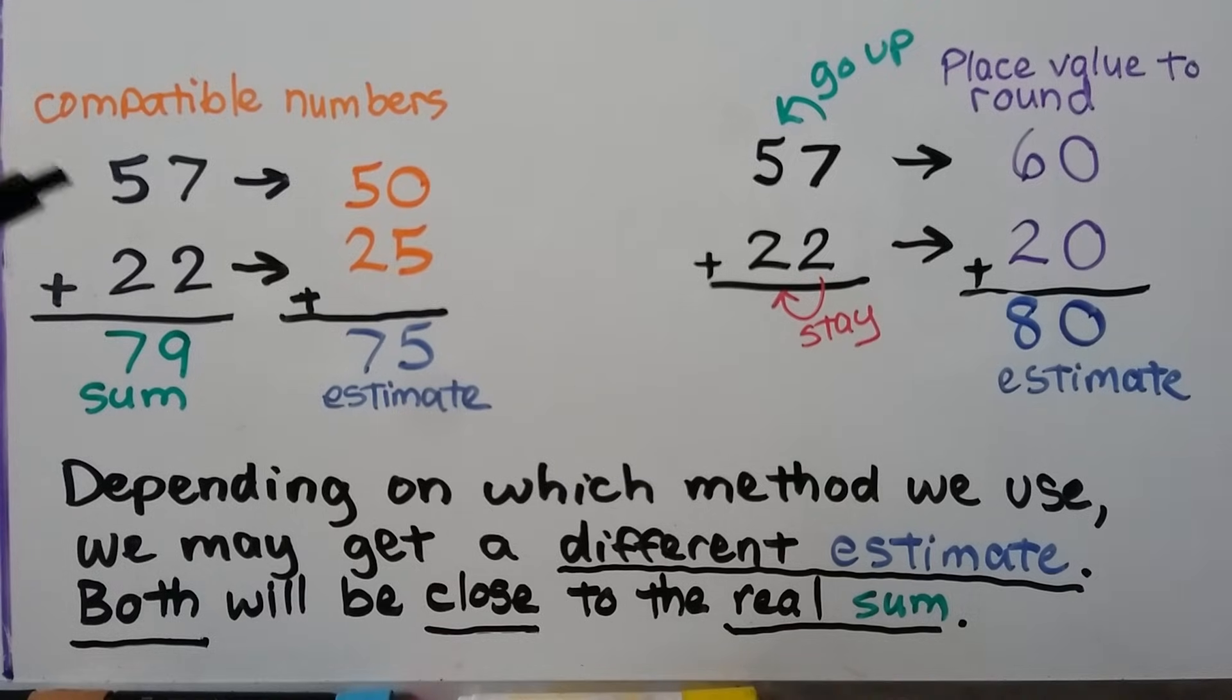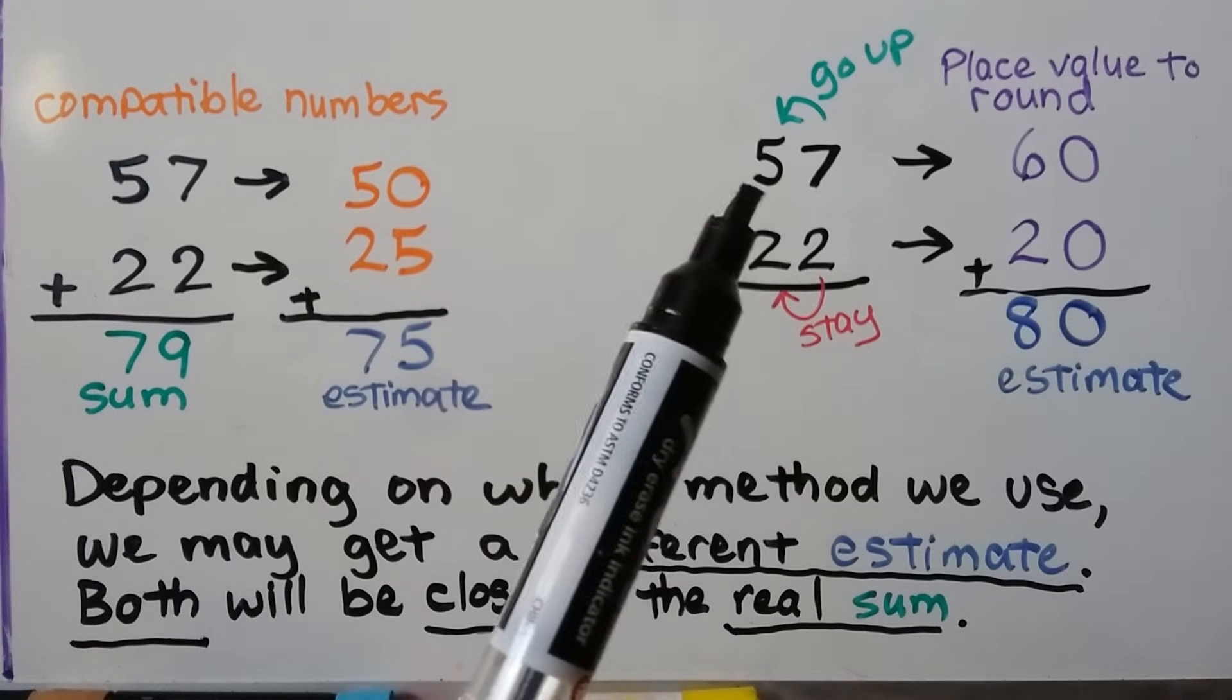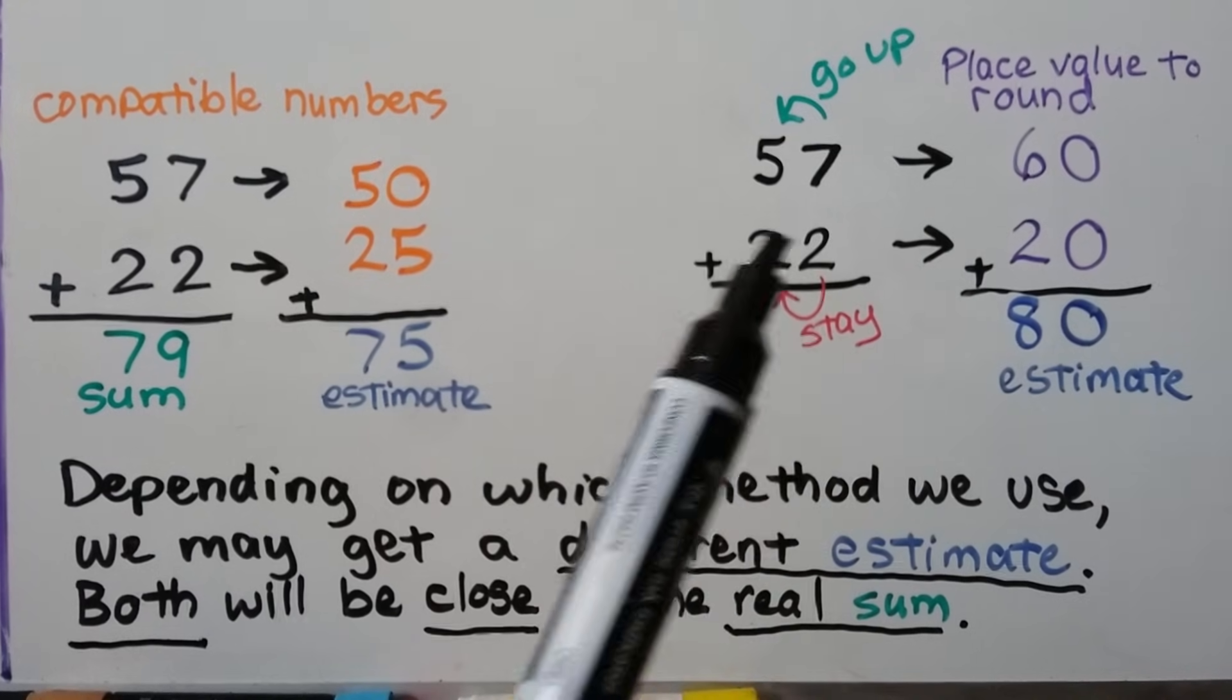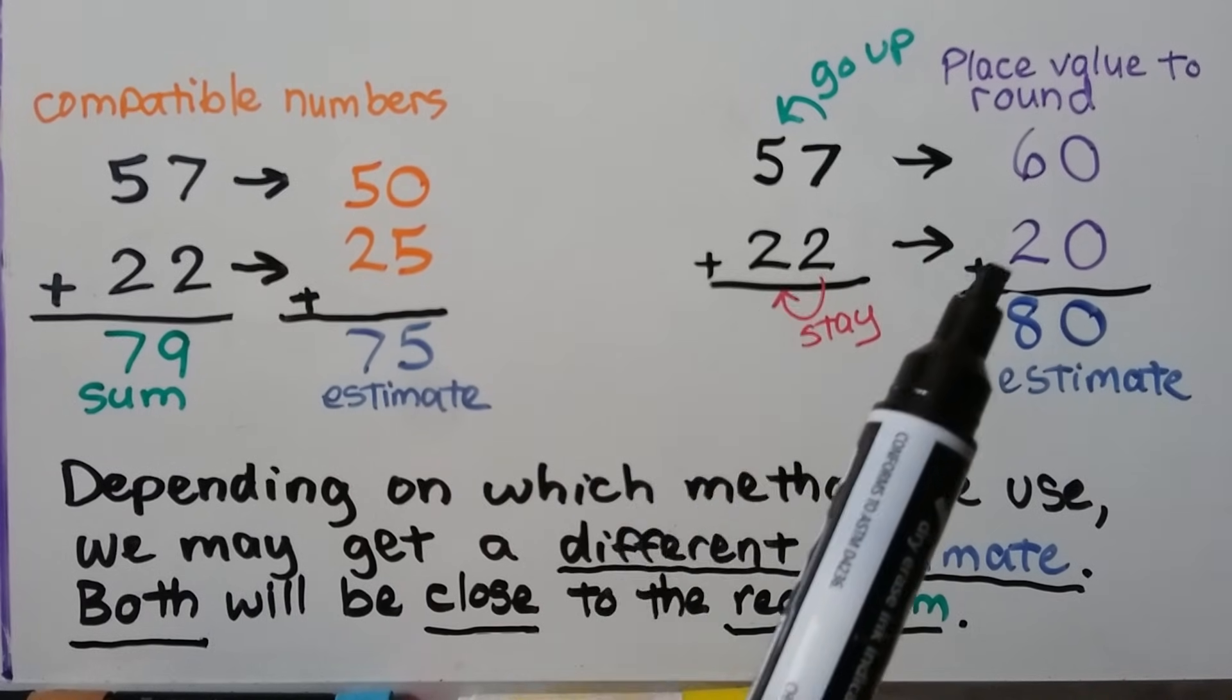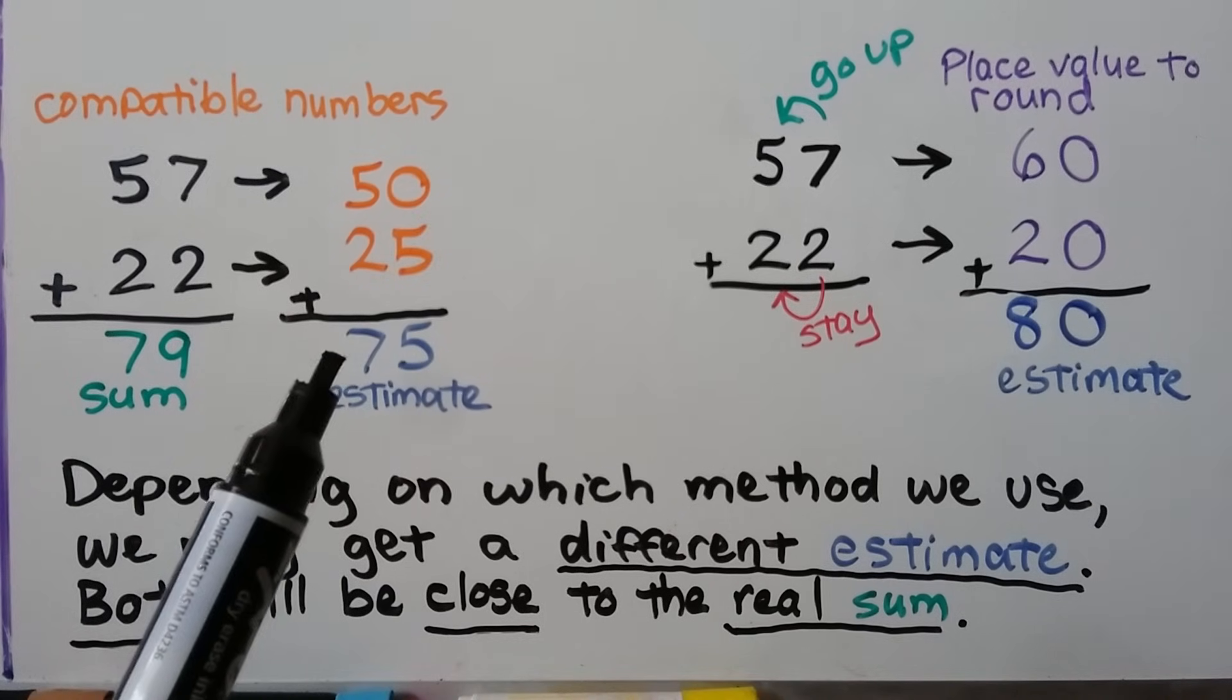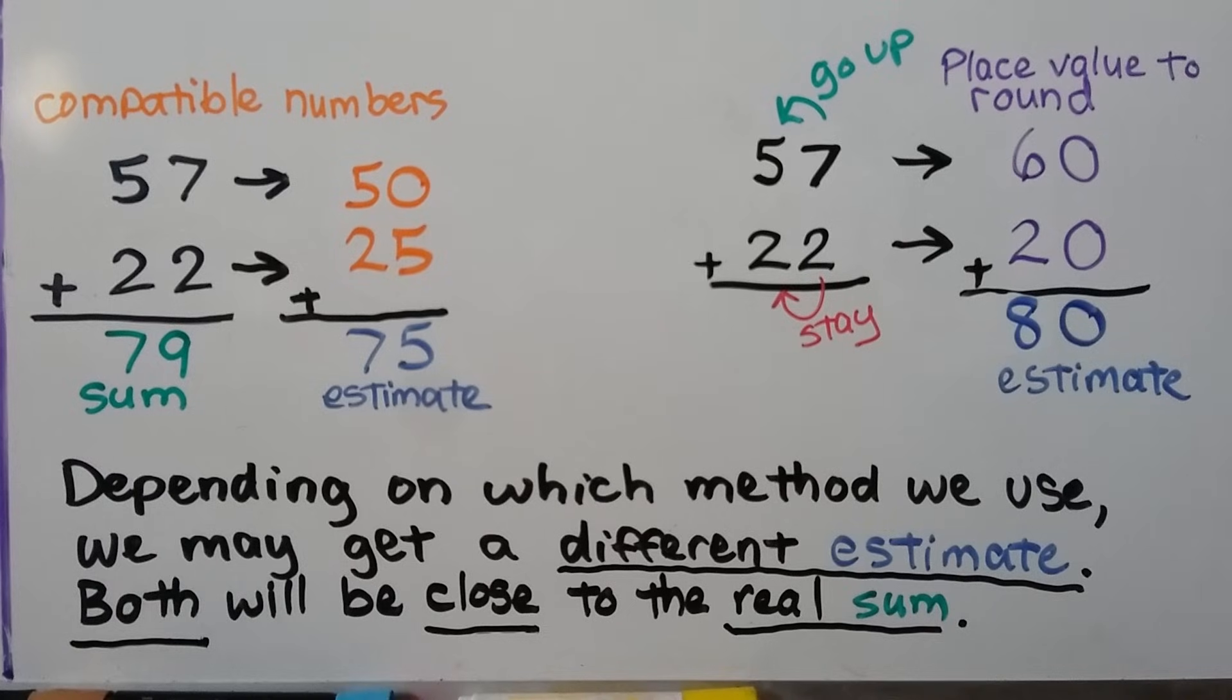So again, using compatible numbers, we can say 57 is about 50. We can say 22 is about 25 and add them and get a 75 for an estimate. The actual sum is 79. But if we use place value to round for 57 plus 22, this 7 tells the 5 to go up to a 6, and then it turns into a 0. So we have 60 when we round it to the nearest 10. And this 2 tells the 2 to stay the same, and then it becomes a 0. So that's a 20. And when we add 60 plus 20, we get 80. So using these numbers as compatible numbers, we get a 75 for an estimate. And when we round to the nearest tens place, we get an 80 for an estimate. So depending on which method we use, we may get a different estimate. But both will be close to the real sum. They're just estimates. They're not exact.